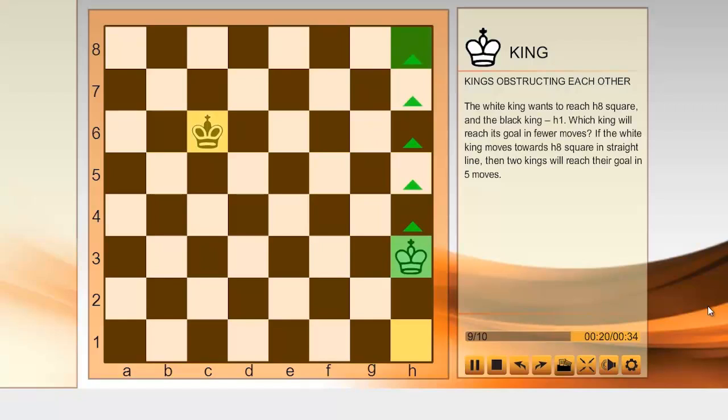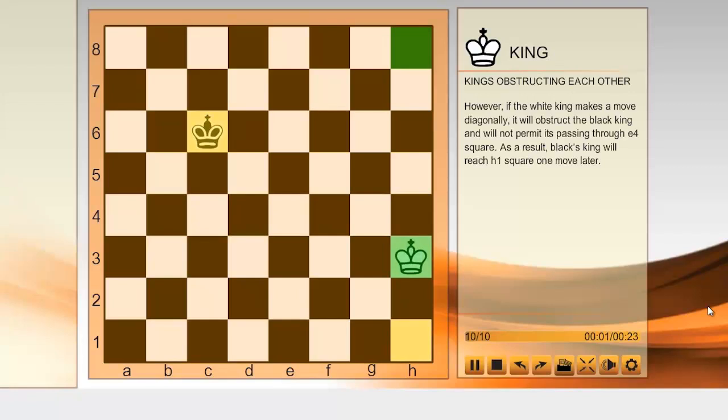If the white king moves towards h8 square in straight line, then two kings will reach their goal in five moves. However, if the white king makes a move diagonally, it will obstruct the black king and will not permit its passing through e4 square. As a result, black's king will reach h1 square one move later.